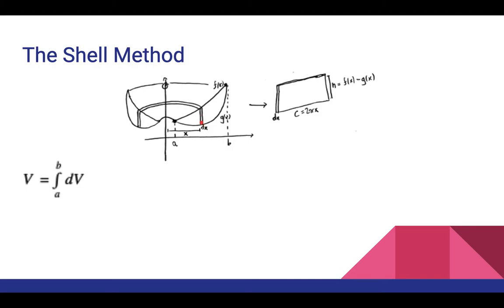To find the volume of each shell, we can imagine taking each cylindrical shell and unfolding it until it's just one sheet of thickness dx. The length of this sheet is the circumference of our cylindrical shell. Since the shell goes around in a circle, and x is the distance from our axis of rotation to the cylindrical shell, our circumference is going to be 2πx.